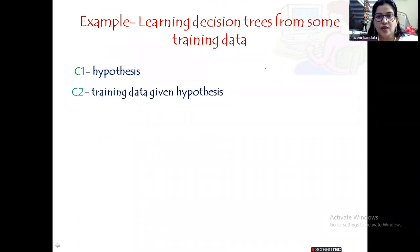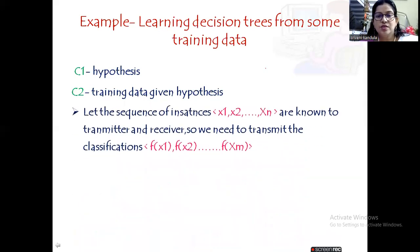Here we are taking C1 as the hypothesis and C2 as the training data given hypothesis. We are taking the assumption that both the sender and receiver know what are the training data or what are the training instances. We are taking x1, x2, up to xn as the training instances, and these are known to both transmitter and receiver.